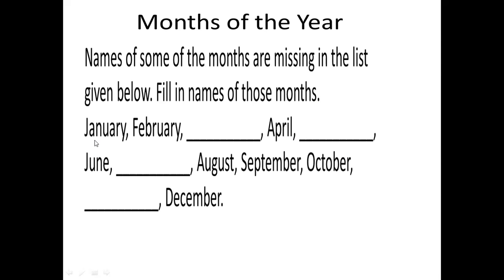Names of some of the months are missing in the list given below. Fill in the names of those months. January, February and March. Very good. April, after April, May, June, July, August, September, October, November and December. So, these are the 12 months of the year.